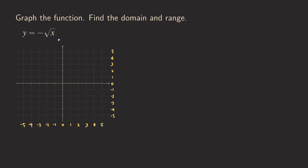Hello everyone, it's Wilson here. Today let's talk about graphing this square root function. As you can see here, this is not the most basic square root function because there was a negative sign in front of the square root of x. We are going to use transformation, so that means we are going to start by first graphing the parent function, which is y equals square root of x.